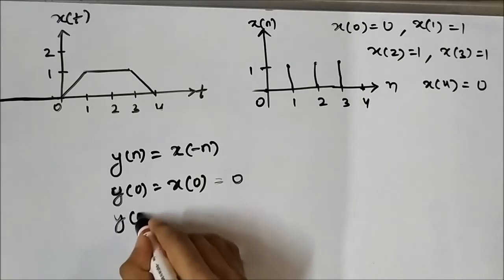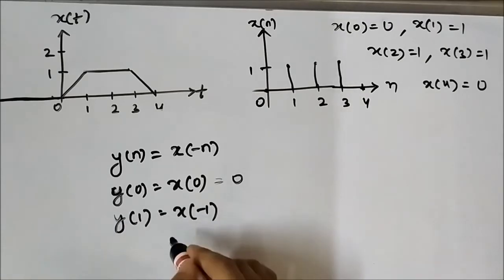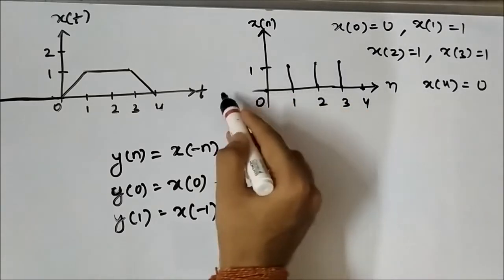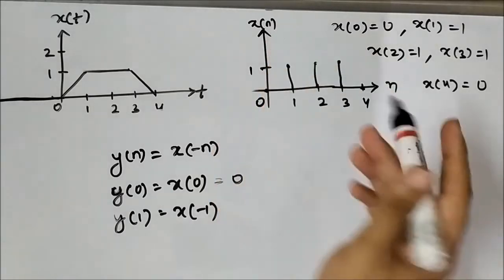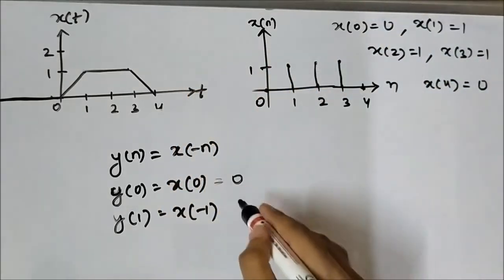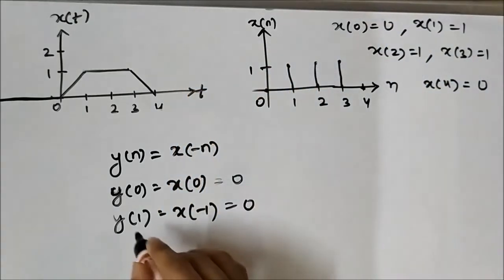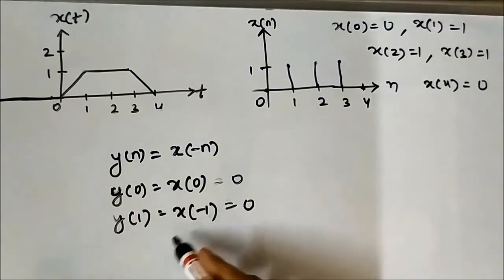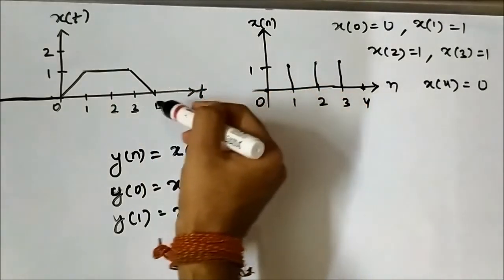Similarly, y[1] will be x[-1]. Now in the negative direction, there is no value of x[n] given, so it will be 0. We do not need to go further in the positive direction because it will give us x[-2], x[-3], x[-4], which are all 0.